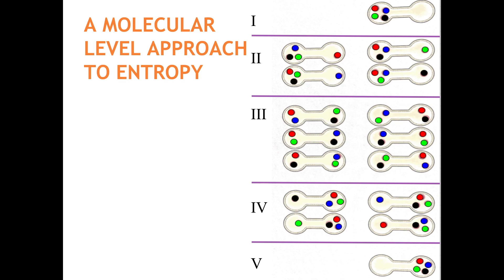The numbers go up exponentially each time you add a molecule to the system. So imagine how much more probable arrangement three is for a hundred molecules, or two hundred molecules, or a mole of molecules. To sum up, a gas will expand into a vacuum and give a uniform distribution of its molecules because the expanded state has the highest positional probability — the most entropy — of the states available to the system.